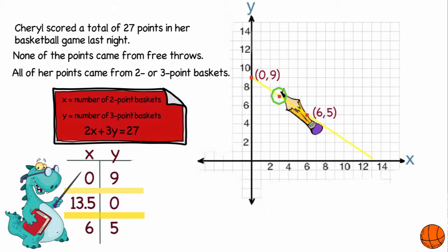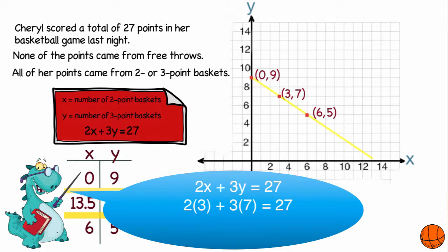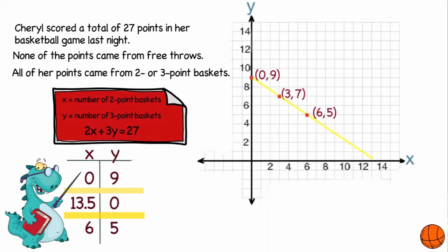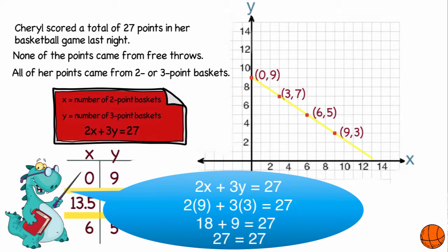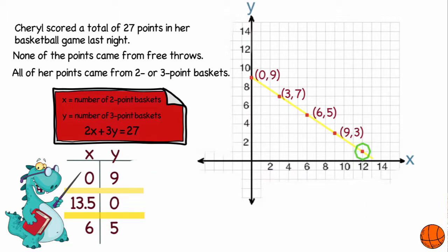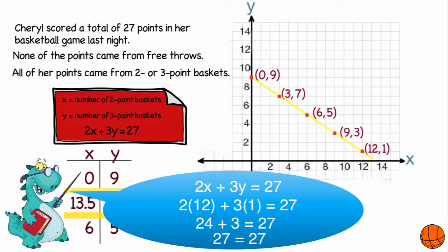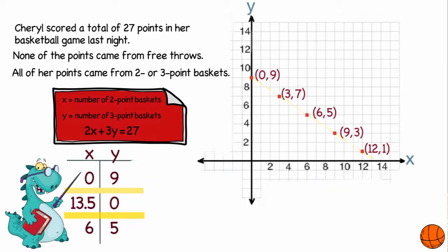Looking at this graph, it looks like I have three two-point baskets and seven three-pointers. I can check that by doing two times three plus three times seven. So that's a possible combination. It looks like I could also try a coordinate right here: nine and three. I can check that. Nine two-point baskets plus three three-point baskets. Eighteen plus nine is 27. And it looks like I could also get a coordinate right here: twelve two-point baskets and one three-point basket. I can check that. And it looks like those are the only possible combinations that could have happened in this problem.